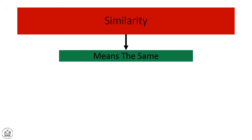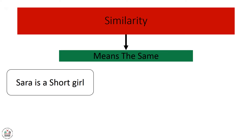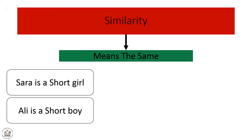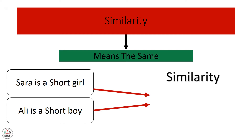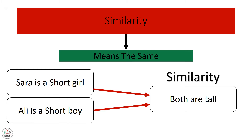We will begin with the first part, which is called similarity. Similarity means the same. To clarify this, let's take the following example. Sara is a short girl. Ali is a short boy. What is the trait that Sara and Ali are similar in? Yes, the similarity is both are short.